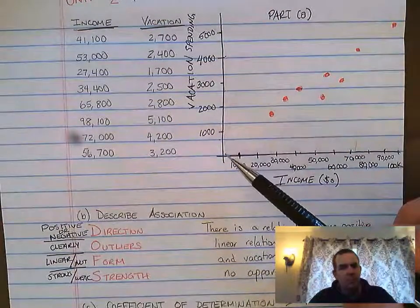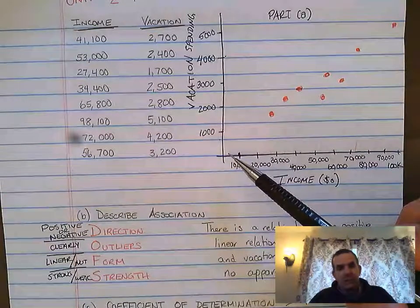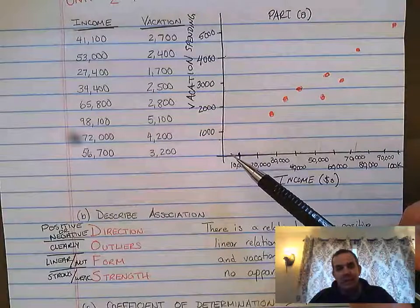So like if we perhaps had someone who made $1,000 a year and spent nothing, that might be an outlier. And even then I might question that.